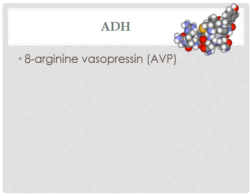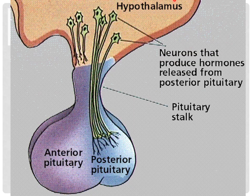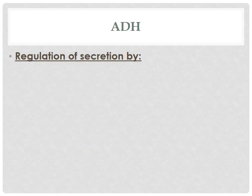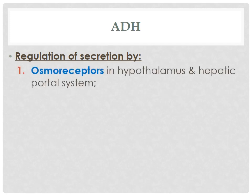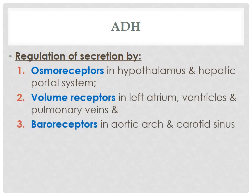What is ADH? Chemically, it is 8-arginine vasopressin, which is synthesized in the hypothalamus and secreted by the posterior pituitary along with oxytocin. Secretion of ADH is regulated by three types of receptors: osmoreceptors, volume receptors, and baroreceptors. Osmoreceptors detect plasma osmotic pressure and are situated mainly in the hypothalamus and also in the hepatic portal system.